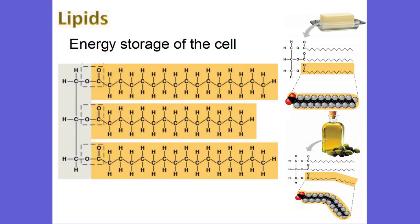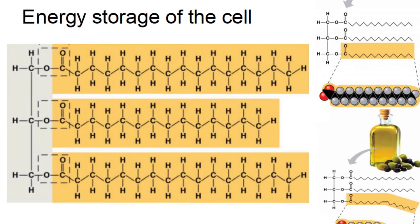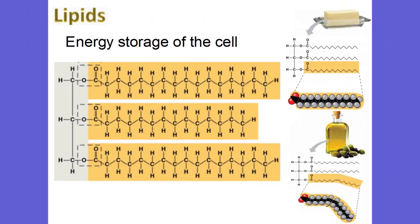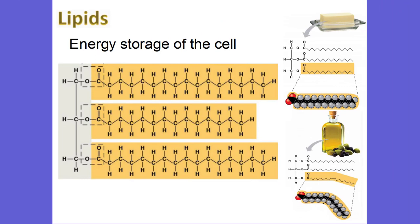The next macromolecule is lipids, otherwise known as fats. They are the energy storage of the cell — long-term energy sources. They're nonpolar and insoluble in water. The most famous of all the lipids are the triglycerides, which are made from glycerol and three fatty acids. They don't dissolve in water, which is why things like butters and oils do not dissolve in water — they're nonpolar and do not react with the hydrogen-bonding interactions of water. Butters are called saturated fats, and the more healthy oils are called unsaturated fats.